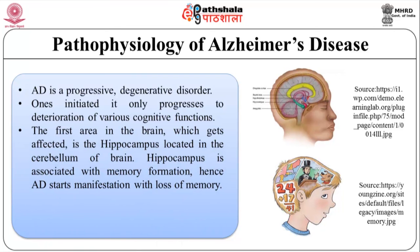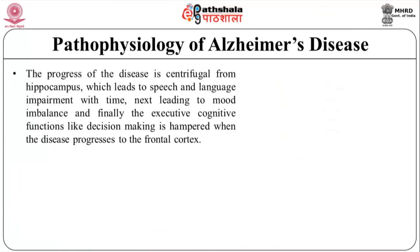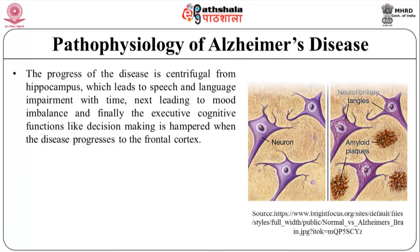The first area in the brain which gets affected is the hippocampus, located in the cerebrum of the brain. The hippocampus is associated with memory formation. Hence, Alzheimer's disease starts manifestation with the loss of memory. In the initial stages, the patient can still recall memories but the formation of new memory is hindered. The progress of the disease is centrifugal from the hippocampus, which leads to speech and language impairment with time, next leading to mood imbalance, and finally executive cognitive functions like decision making are hampered when the disease progresses to the frontal cortex.